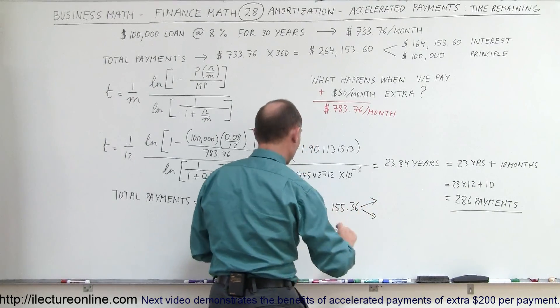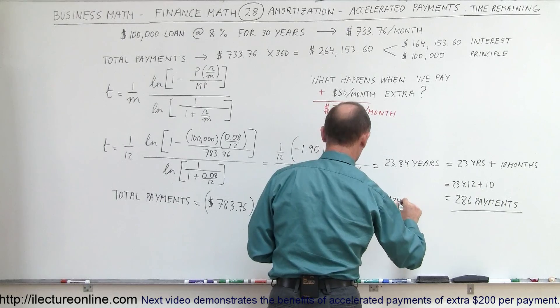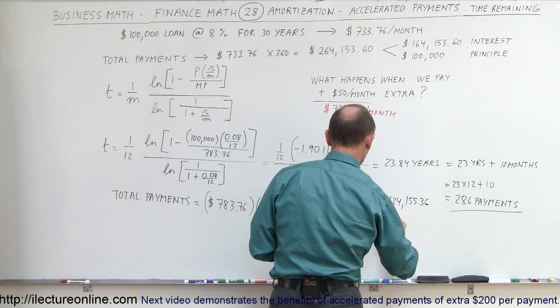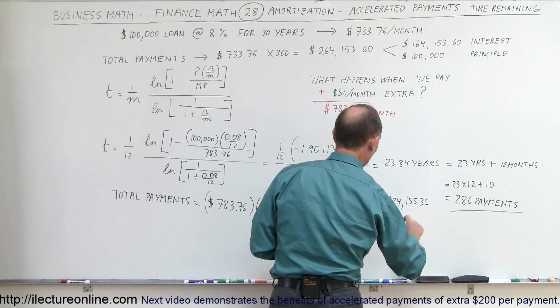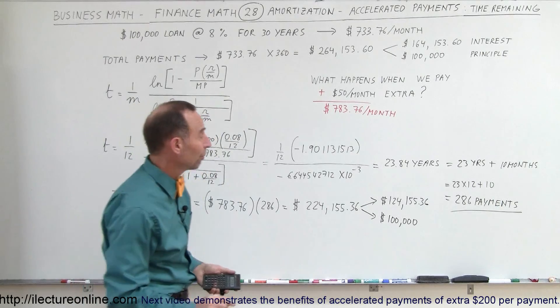which means that of that amount, $124,155.36 goes to interest, and $100,000 goes to principal.